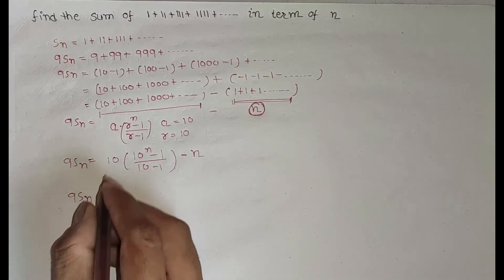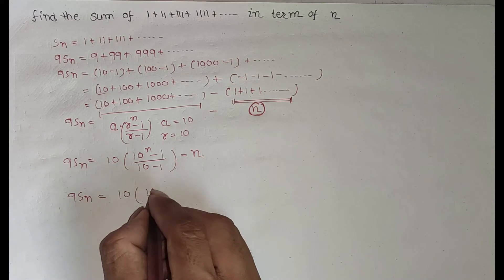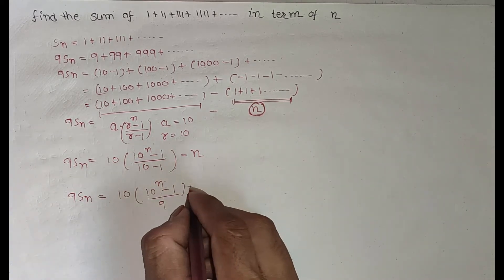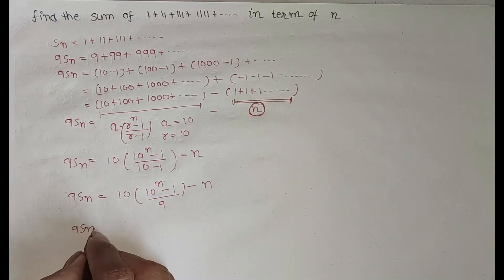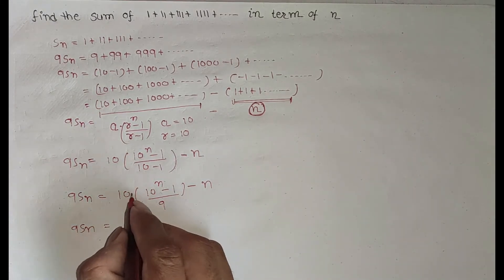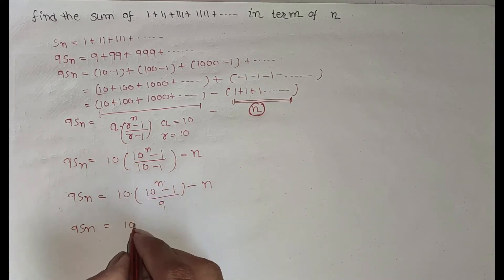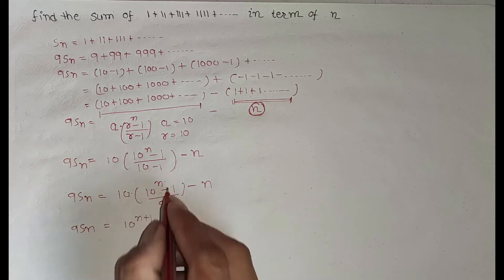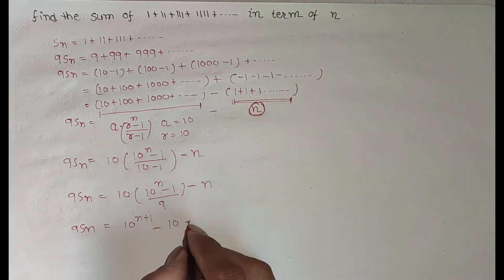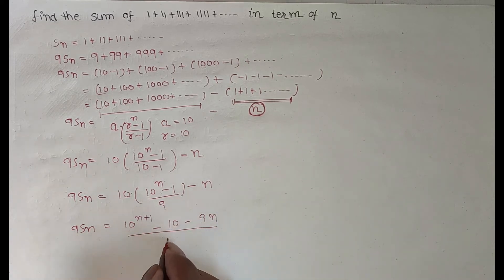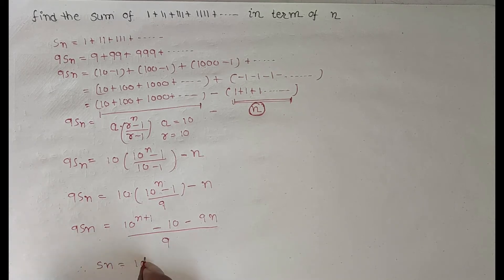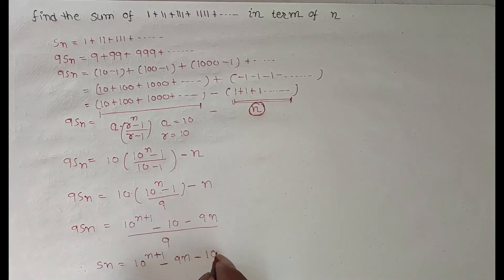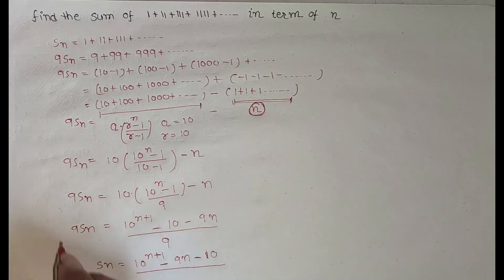So 9 times Sn equals 10 times (10^n minus 1) divided by 9 minus n, which gives (10^(n+1) minus 10) divided by 9 minus n, or (10^(n+1) minus 10 minus 9n) divided by 9. Finally, Sn equals (10^(n+1) minus 9n minus 10) divided by 81. And that is the answer.